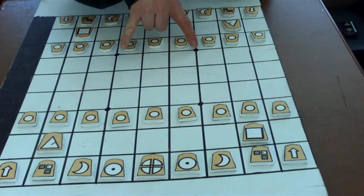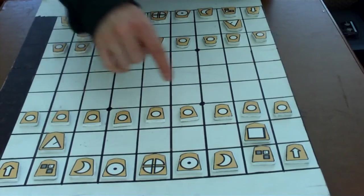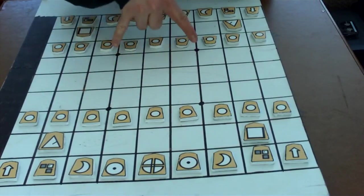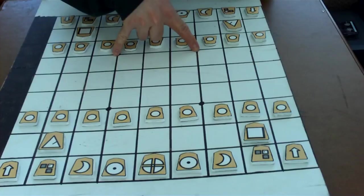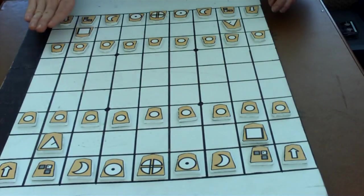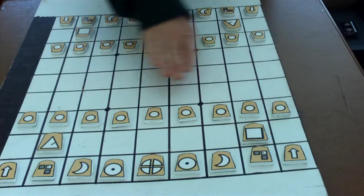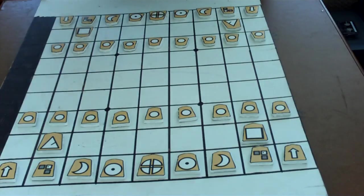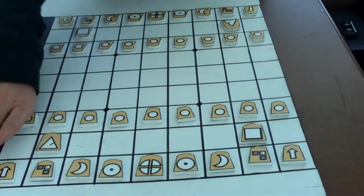Notice that the board has some dots here. These dots separate three sections of the board. We have these three ranks here, the three ranks in the middle, and three ranks at the other end.